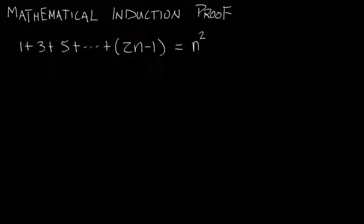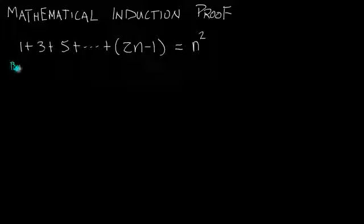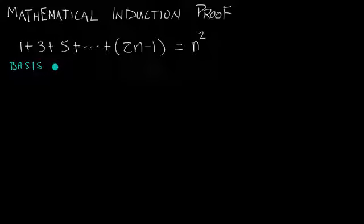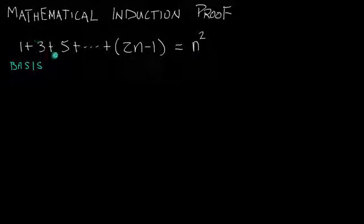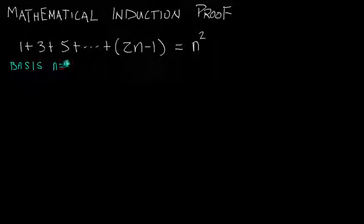Now that I've got that explained, let's begin the mathematical induction proof. The very first step is what we call the basis step. For the basis step, we look at the most simple case we can come up with and make sure this statement is true on both the left-hand and right-hand side. We're going to look at the case where n is equal to 1.